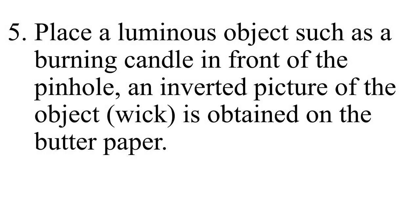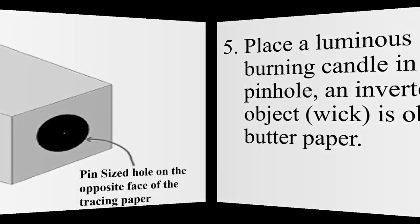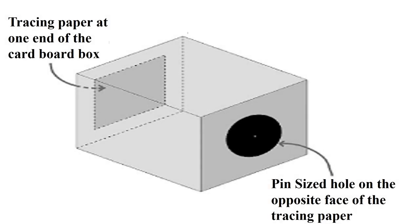Place a luminous object such as a burning candle in front of the pinhole. An inverted picture of the luminous object, that is the wick, is obtained on the butter paper. After construction, our pinhole camera will look almost similar to this diagram. Let us reiterate all these steps and check if we were successful in obtaining the correct pinhole camera.